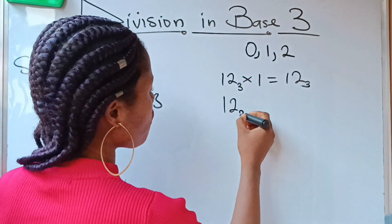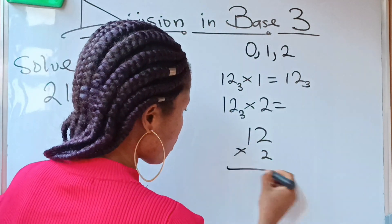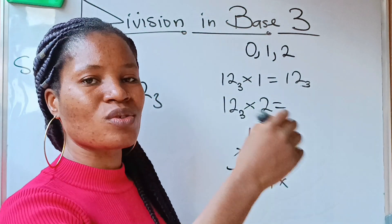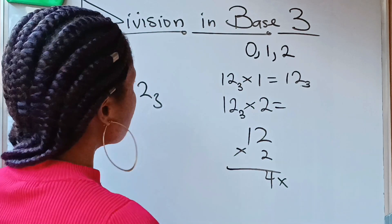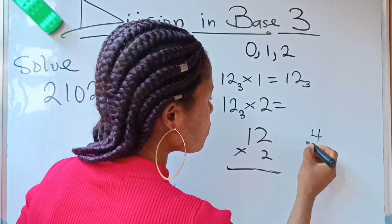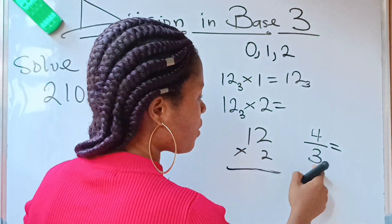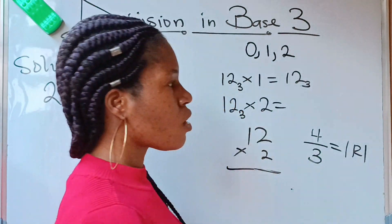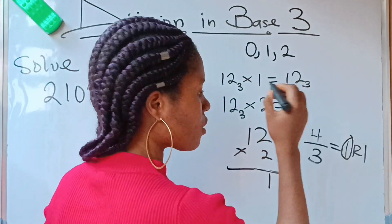So 12 in base 3 times 2: 2 times 2 is 4, and we are not supposed to have 4 in base 3. Once you encounter something like that, you divide it by 3 — remember you are working with base 3. So 3 divides 4 and you get 1 remainder 1.